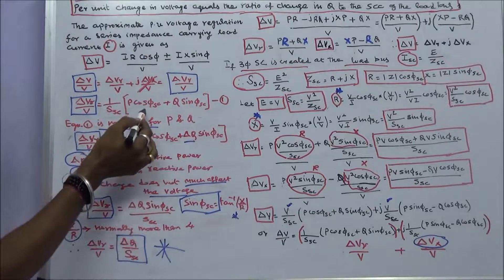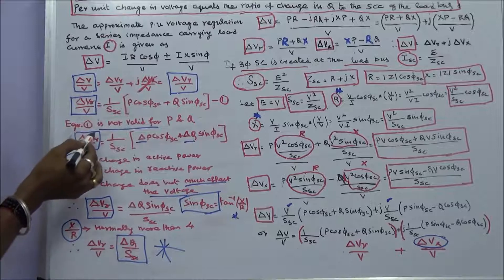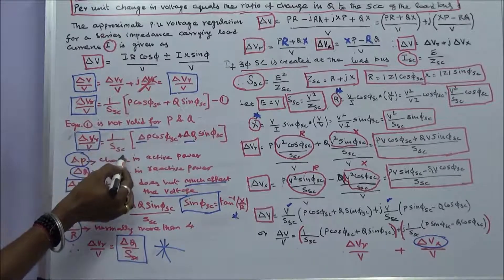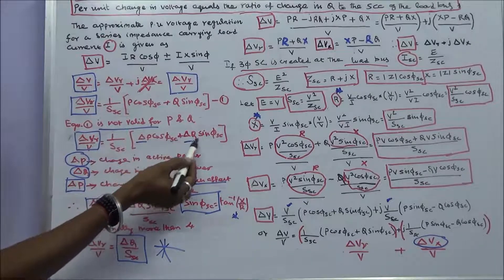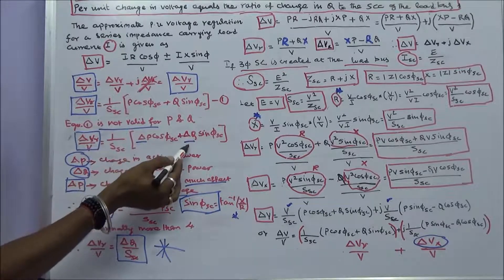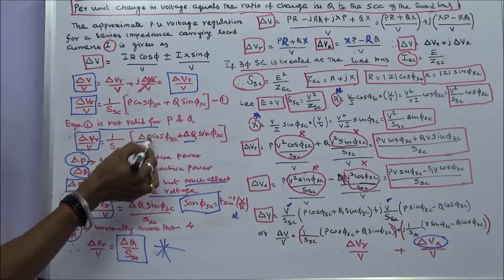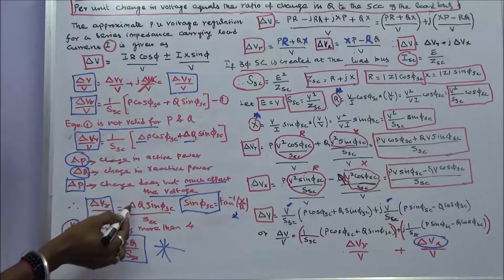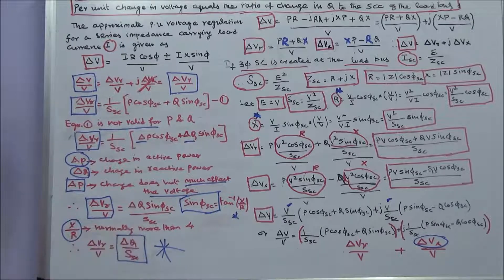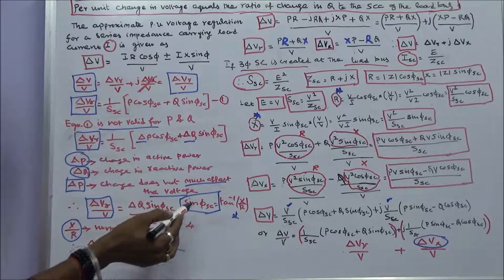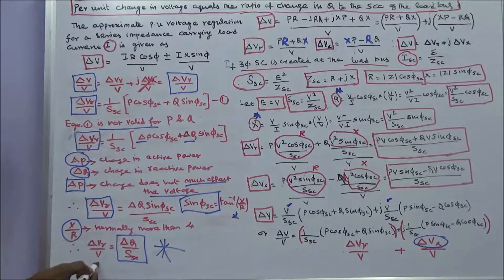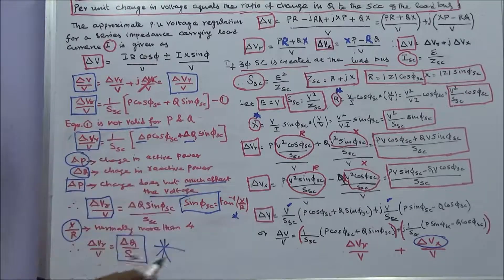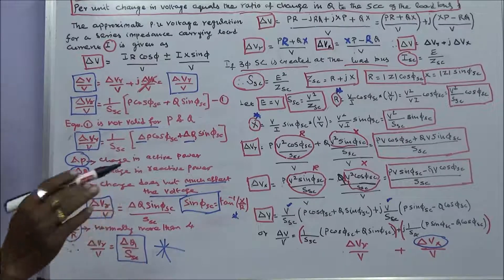Equation 1 is not valid for absolute values of real power P and reactive power Q, but for their changes. Therefore, delta V_R / V equals 1 divided by S_SC times [delta P·cos(φ_SC) plus delta Q·sin(φ_SC)]. Here, delta P is the change in active power. Since delta P does not significantly affect the voltage magnitude, we neglect it. Therefore, delta V_R / V equals delta Q times sin(φ_SC) divided by S_SC. Since the X/R ratio is normally greater than 4, sin(φ_SC) approaches 1. Therefore, delta V / V equals delta Q divided by the short circuit apparent power S_SC.